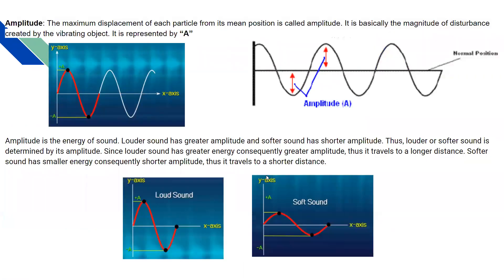Now let us continue with the second characteristic of sound wave, which is known as the amplitude. Amplitude is basically the magnitude of disturbance created by the vibrating object. The greater the disturbance, the greater the amplitude. The maximum displacement of any particle from its mean position is known as the amplitude.